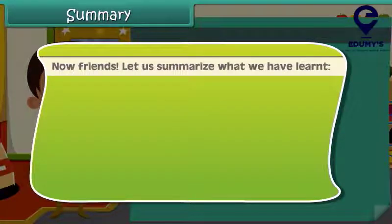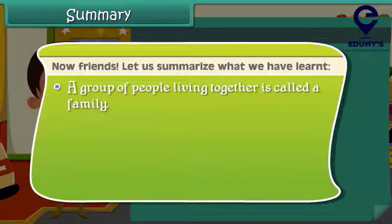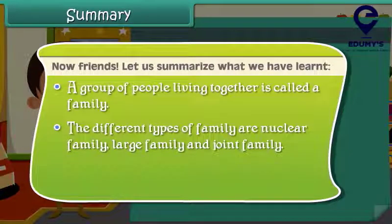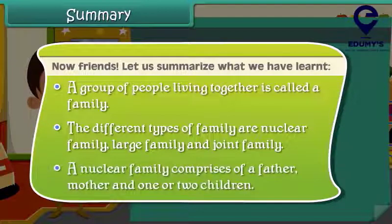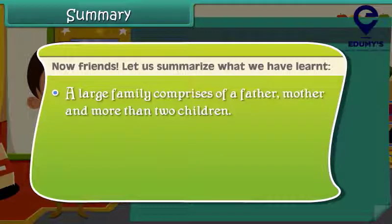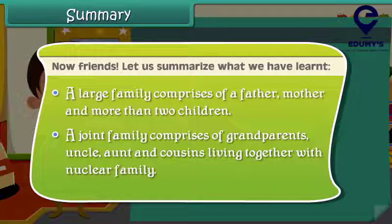Now friends, let us summarize what we have learned. A group of people living together is called a family. The different types of family are nuclear family, large family and joint family. A nuclear family comprises of a father, mother and one or two children. A large family comprises of a father, mother and more than two children. A joint family comprises of grandparents, uncle, aunt and cousins living together with the nuclear family.